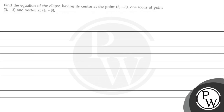Hello, let's read the question first. So the question says, find the equation of the ellipse having its center at the point (2,-3), one focus at (3,-3) and vertex at (4,-3).